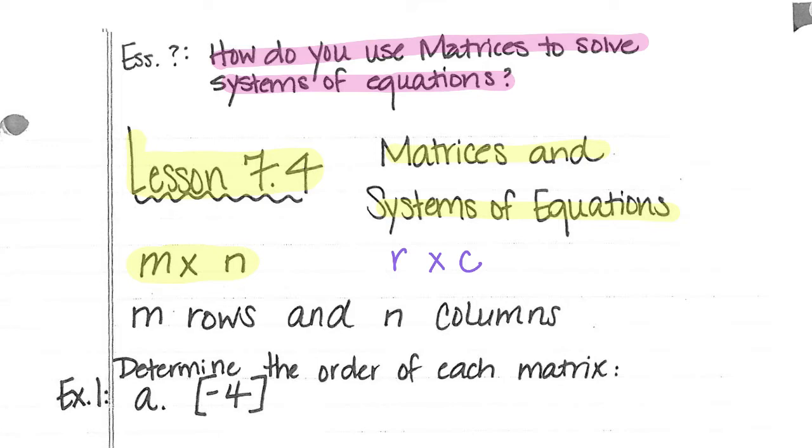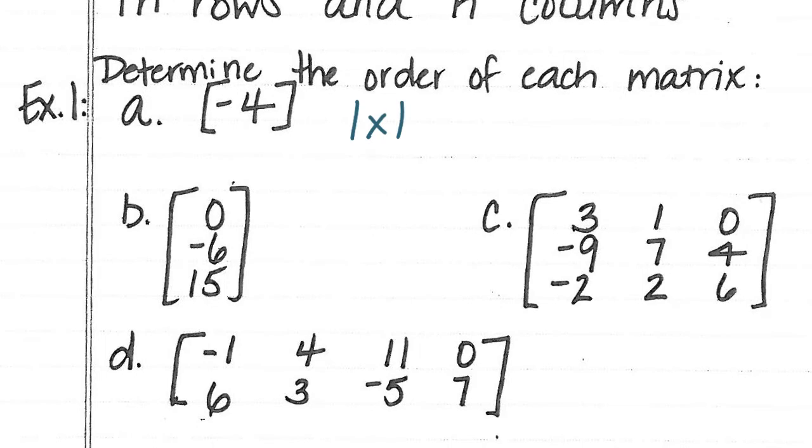Let's look at example 1. Example 1 says determine the order of each matrix. This first one is a 1 by 1. And you'll see why, because when we move on to the others, notice this is 3 rows by 1 column, so this will be a 3 by 1. Notice this is 3 rows by 3 columns, so this will be a 3 by 3.